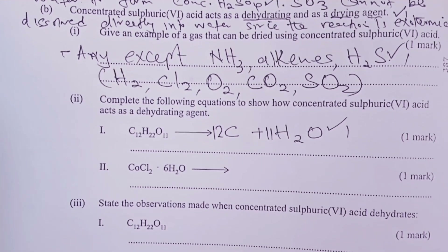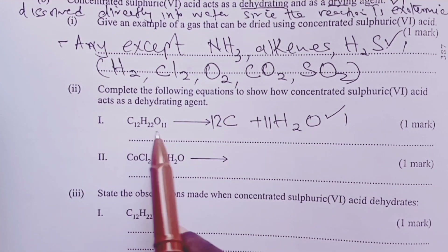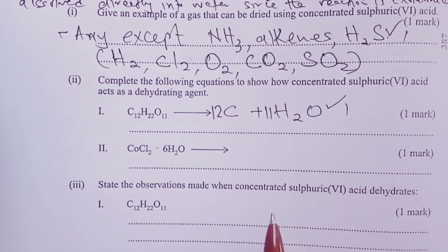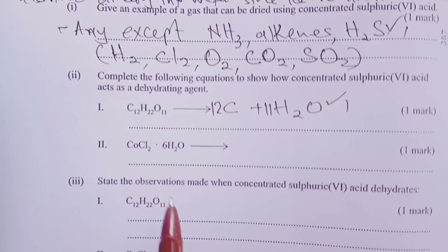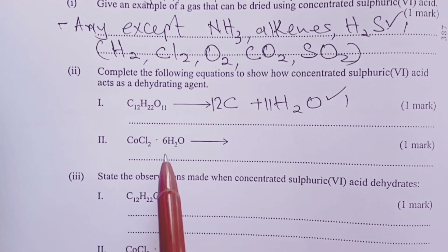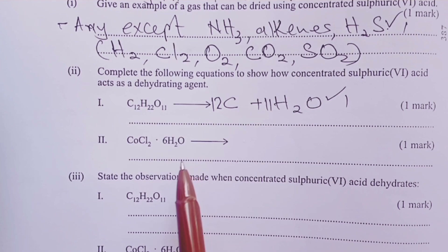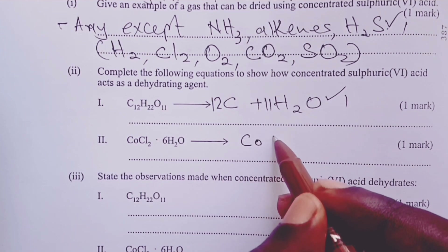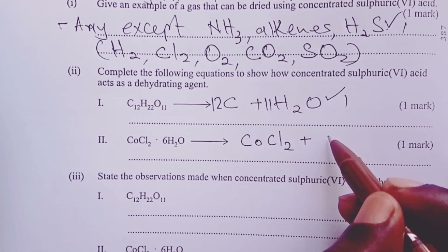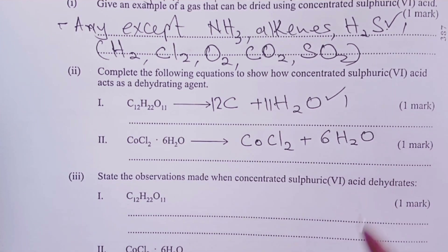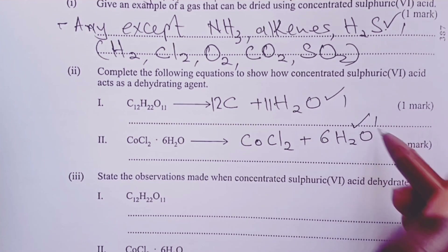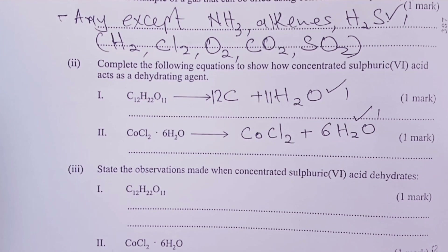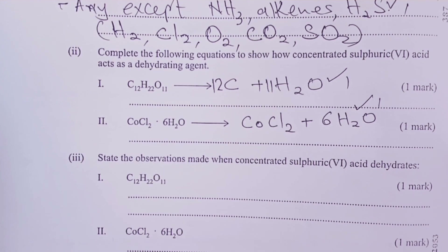State symbols are not necessary since the question didn't indicate any states, so the answer is left without state symbols. For a substance that has water of crystallization, dehydration means losing that water of crystallization. So for hydrated cobalt chloride, the product is anhydrous cobalt chloride with six molecules of water released separately — that is also dehydration.